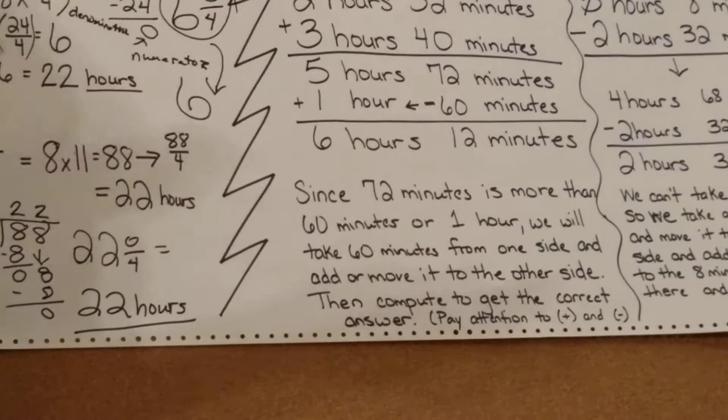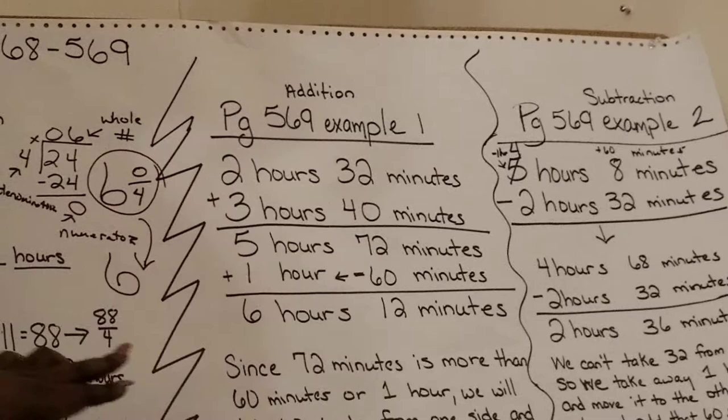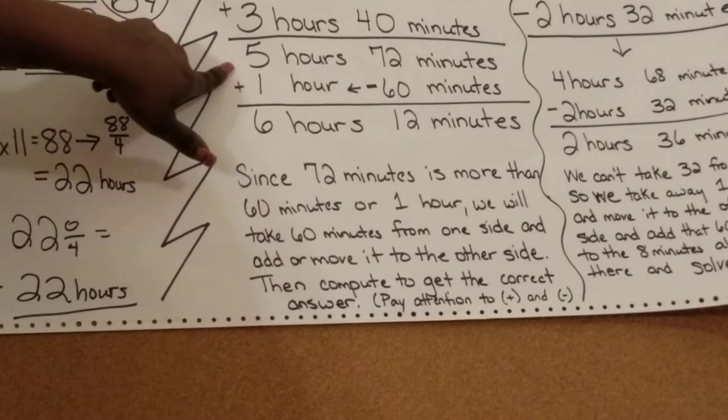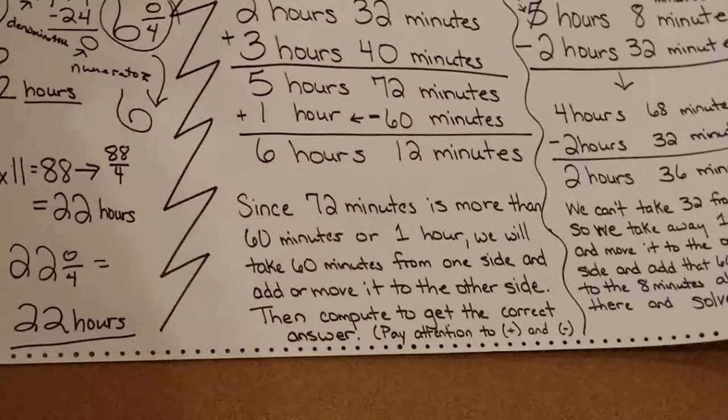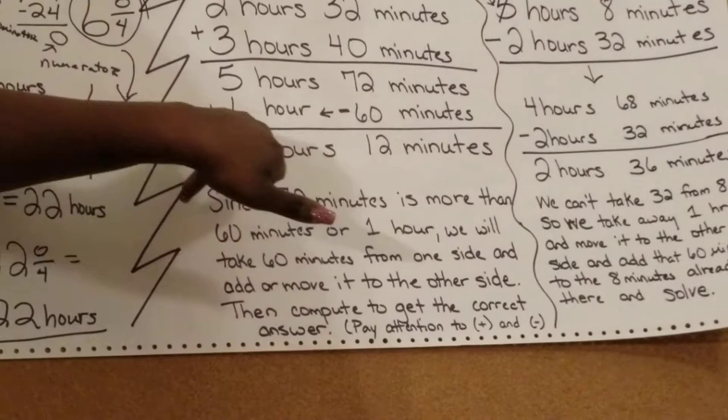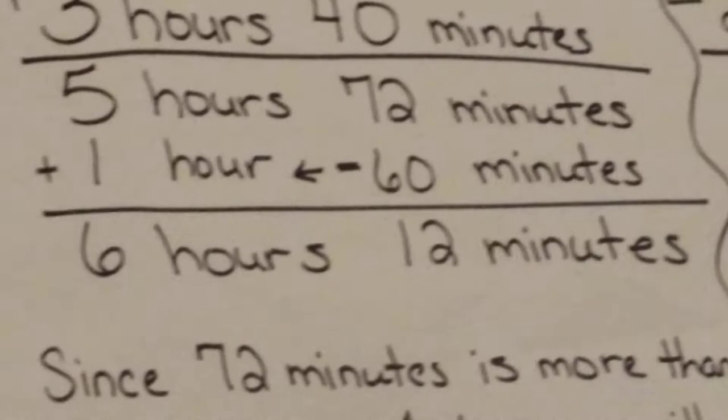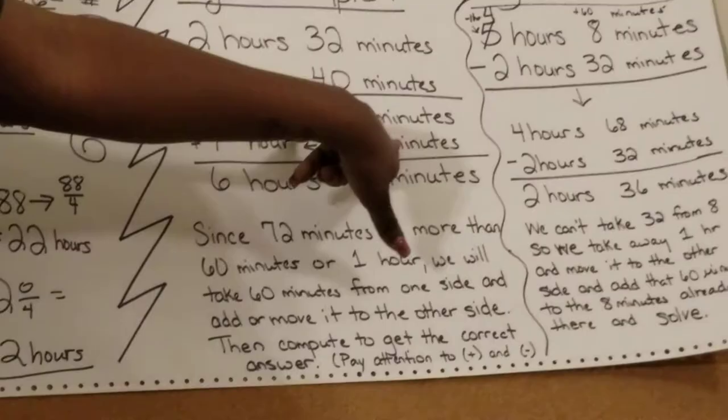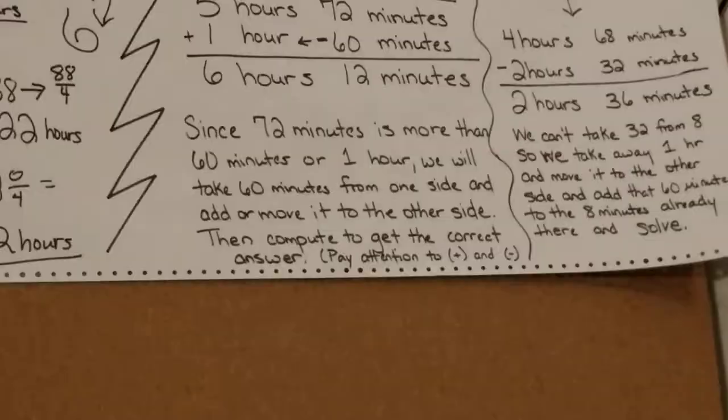That sounds more realistic, oh I'll be there in 12 minutes, as opposed to 72 minutes. Since your 72 minutes is more than 60 minutes or one hour, we would take 60 minutes from one side and add or move it to the other side. Then we compute to get the correct answer. Make sure you remember to pay attention to the plus and minus signs when you're doing each part for your hours and minutes. I've added an hour and subtracted an hour so that we're balanced.